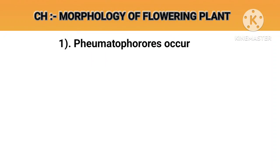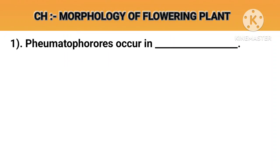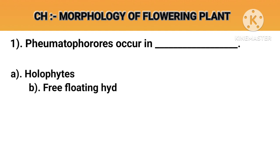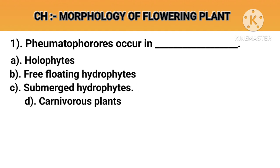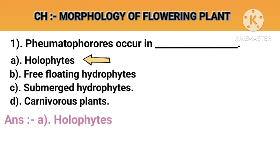Question number 1. Phumetiphorose uccain. Option A: Halophytes. Option B: Free-floating hydrophytes. Option C: Submerged hydrophytes. Option D: Carnivorous plants. Answer A: Halophytes.